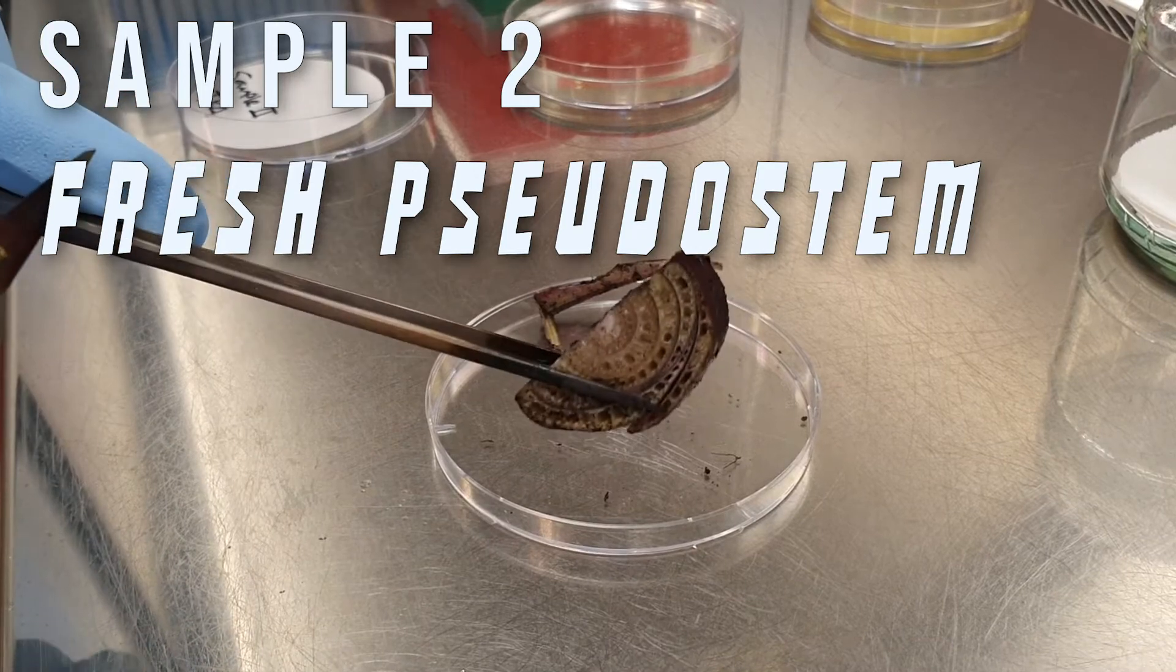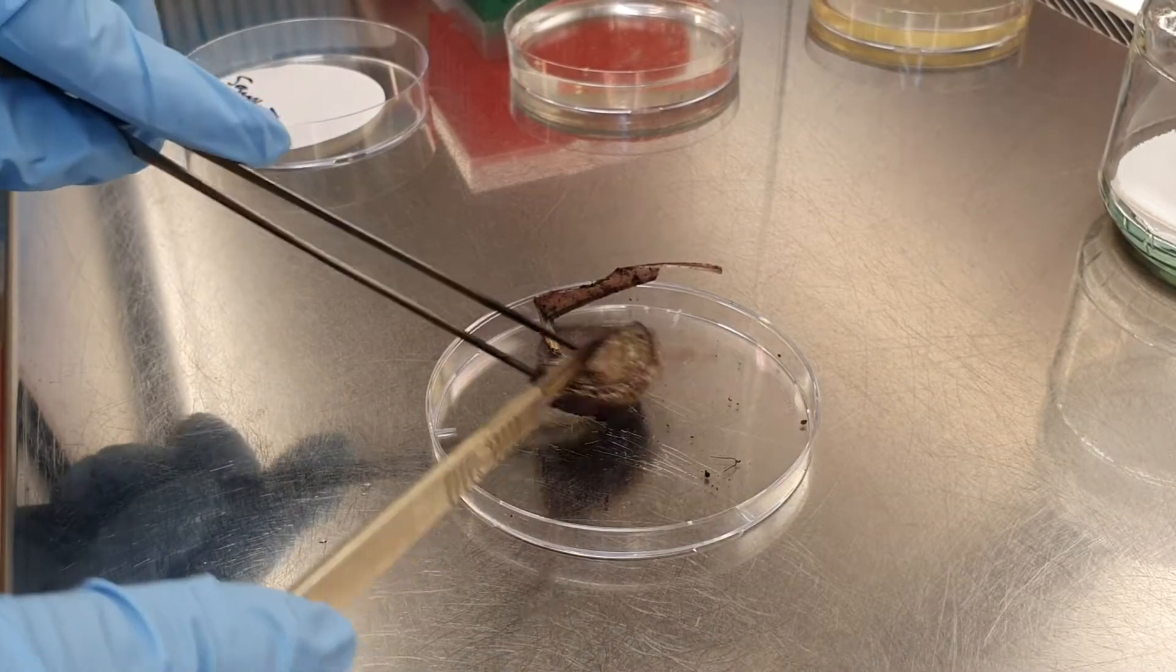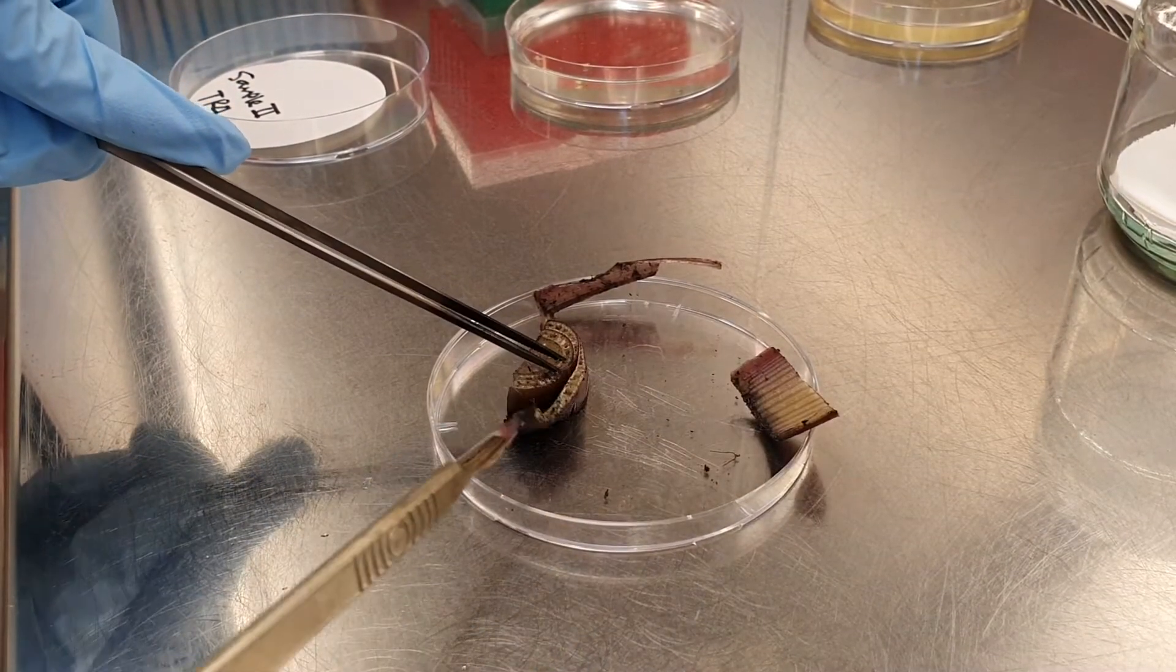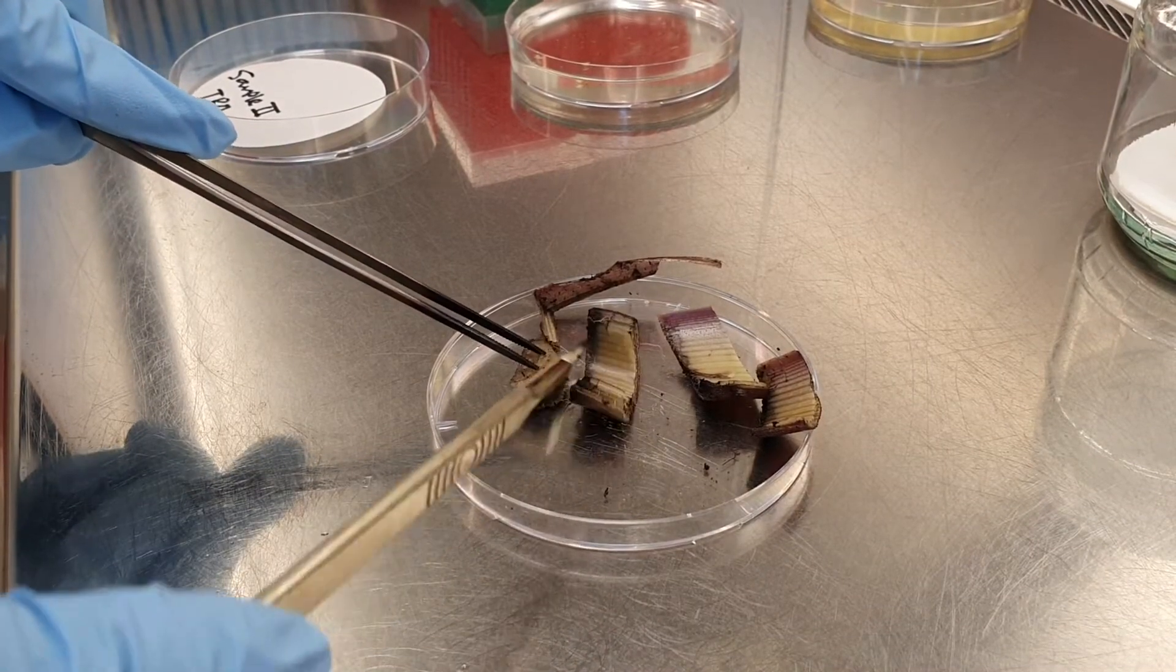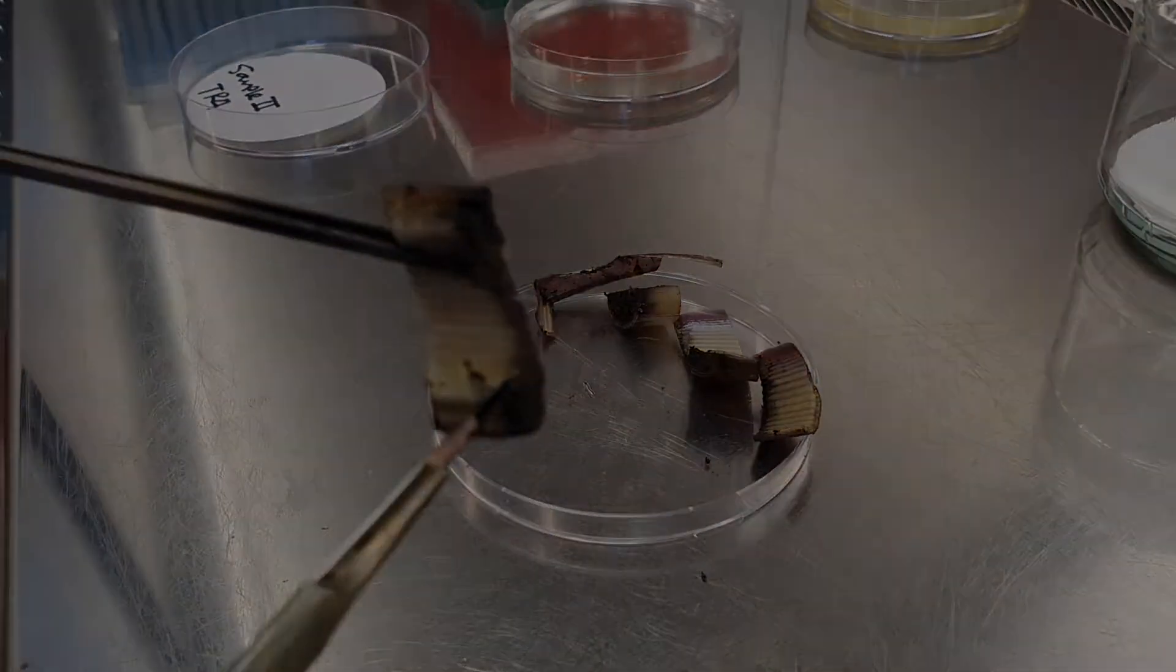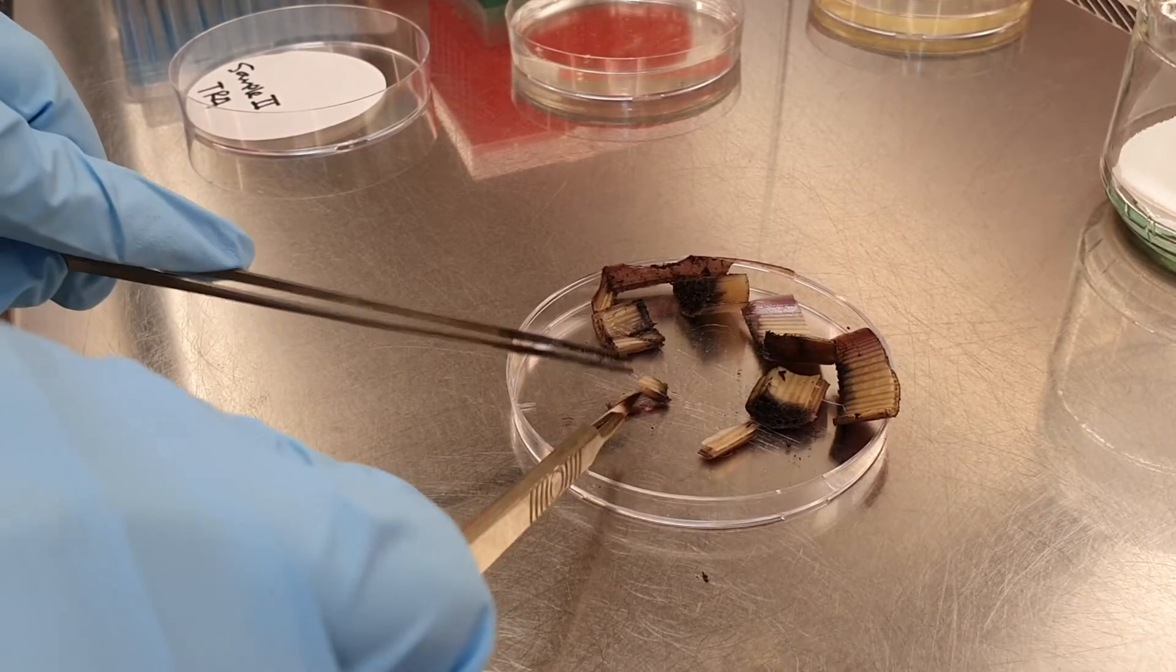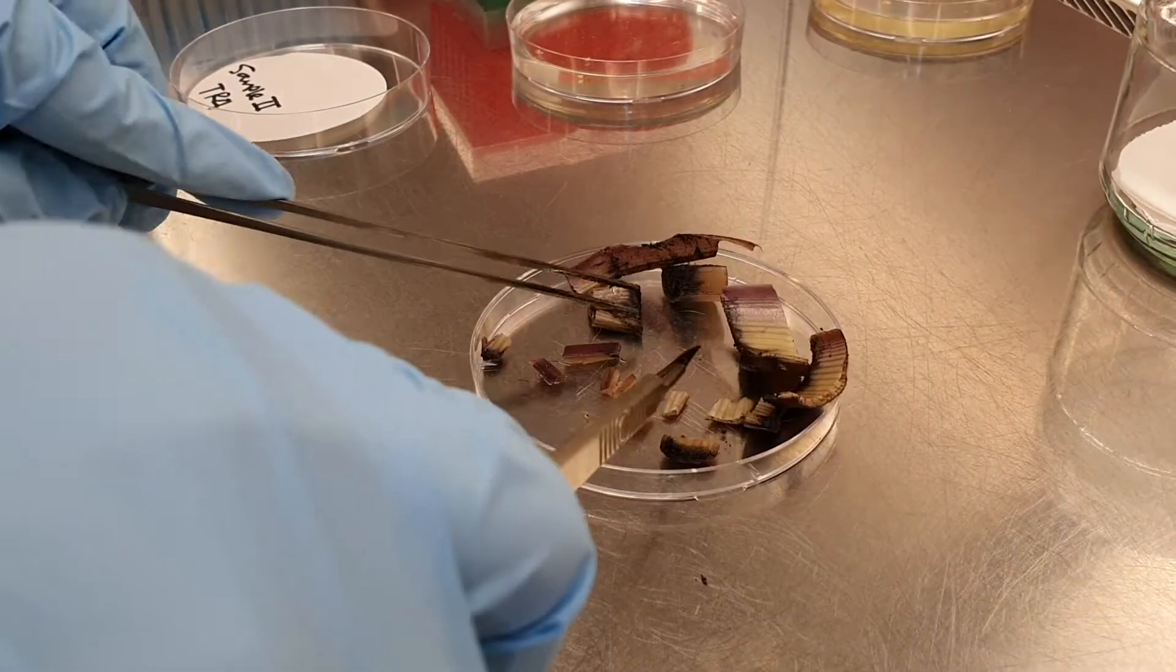Sample number two, seldo stem. For this type of sample, what you need to do is get rid of the first layers. So we are going to eliminate the first, the second, and we are going to focus on the third and fourth layer like this. And we are going to repeat the same process. Just cut very small pieces depending on the number of plates. But I recommend you to put five pieces per plate.